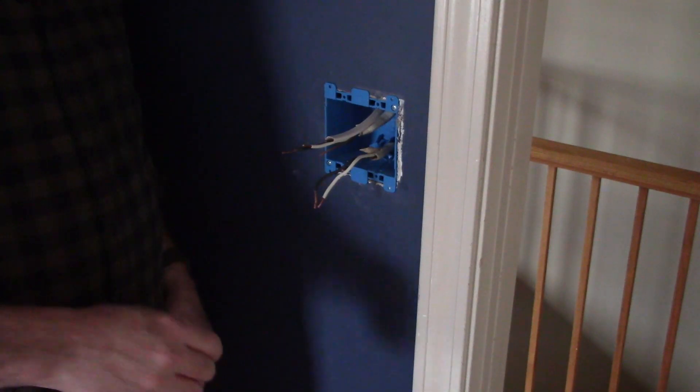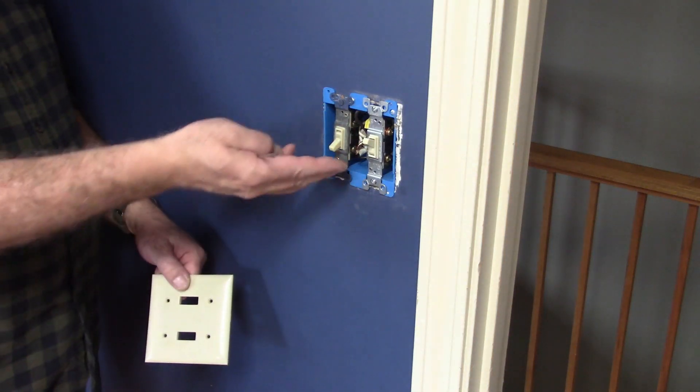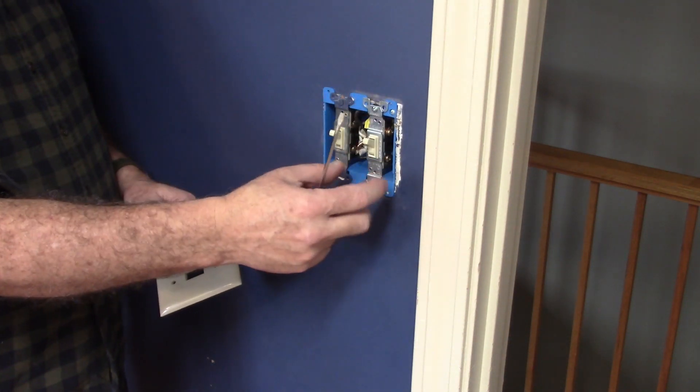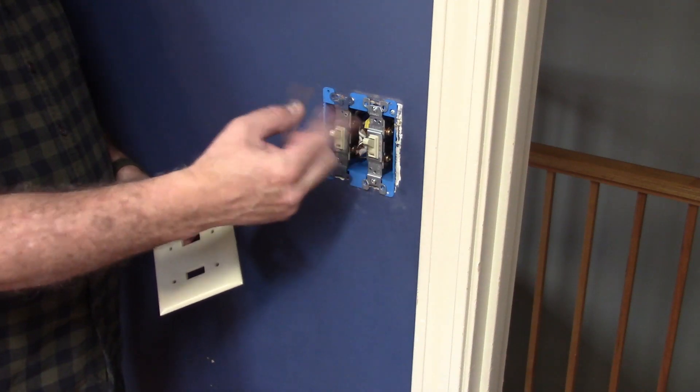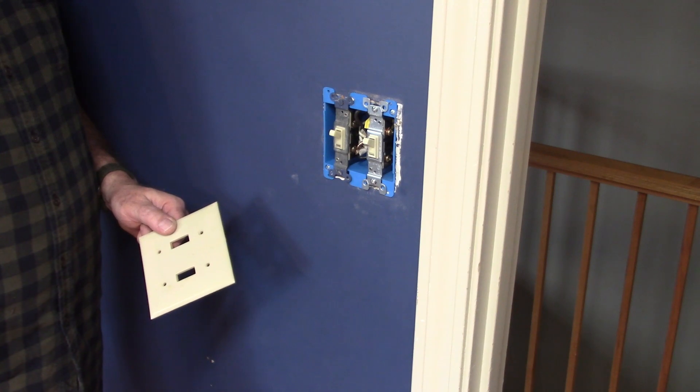All right, so now I just got to get this wired up and I'll be back. Okay, that's got it wired back up. Got my lights back. All right, so that's how you can go from just a single into a double box so that you can run two switches or two outlets or whatever it is that you need to do. All right, hope this was helpful to you. Thank you for watching.